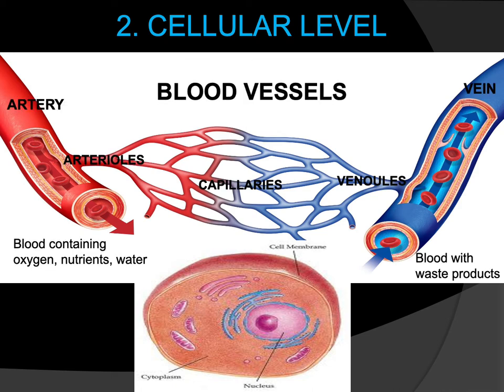In summary, the blood supply delivers oxygen, nutrients, and water to cells via arteries, smaller arteries, and arterioles. At the capillary level, the exchange takes place — the blood containing oxygen, nutrients, and water is made available to the cell, enabling chemical activity and metabolism. After the cell uses these, waste products are released back out through the capillary into venules and then veins, returning to the heart.